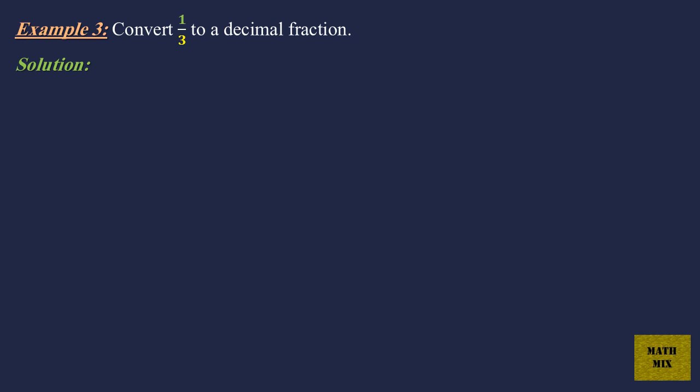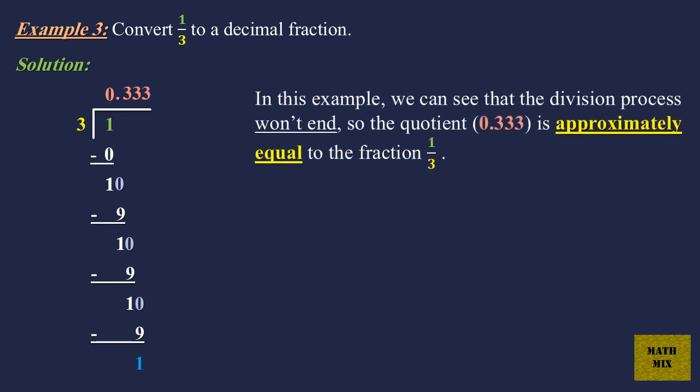Example 3: Convert 1 over 3 to a decimal fraction. Solution: In this example, we can see that the division process won't end. So the quotient, 0.333, is approximately equal to the fraction 1 over 3.